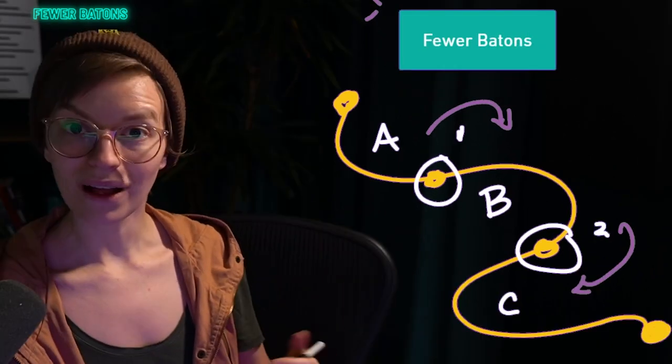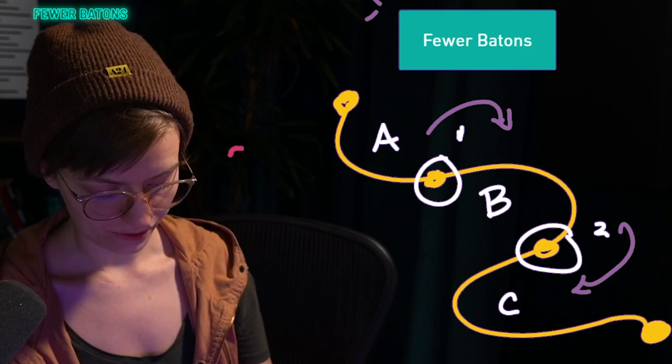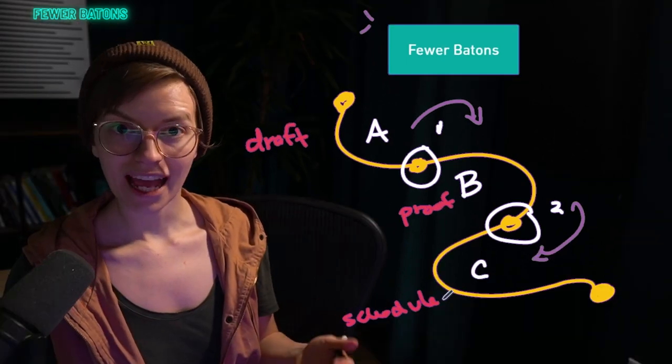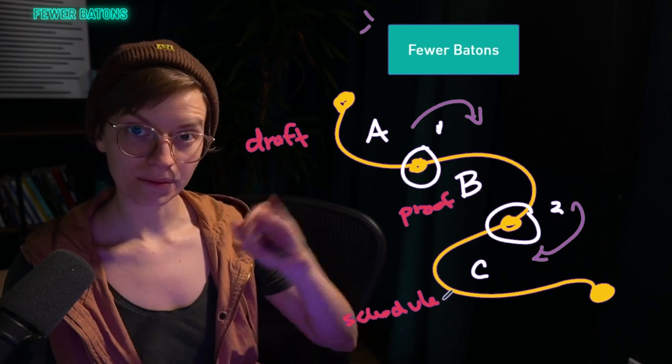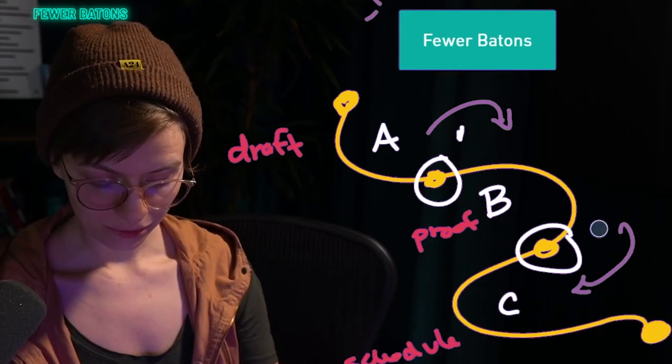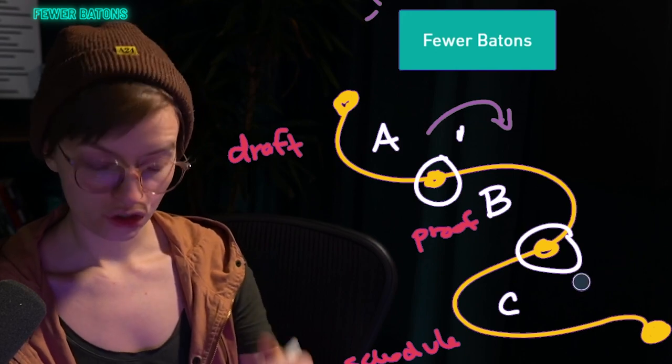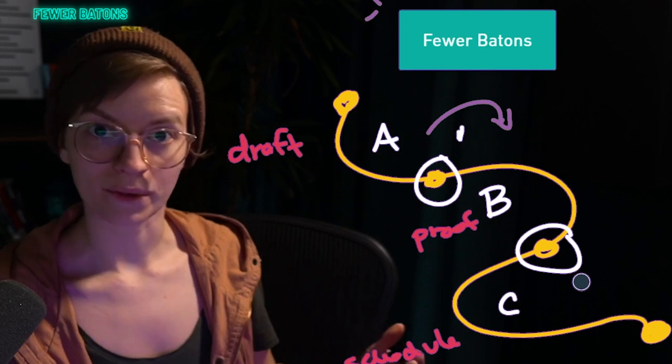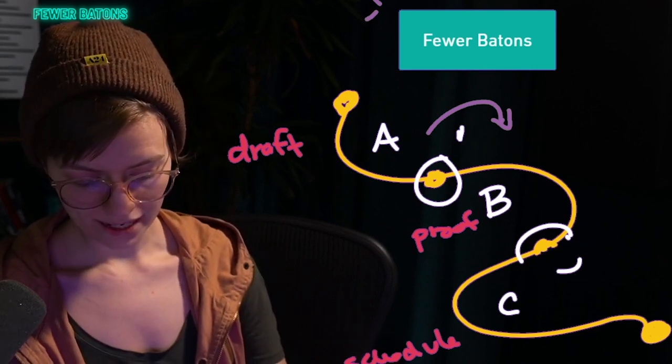The need for communication and the potential for miscommunication can increase with each handoff. So what's the strategy here? Well, let's take the process we have now of, say, draft, proof, and schedule. And rather than having A, B, and C, three separate people working on it, let's get rid of one of the baton exchanges. Let's get rid of the second one. So rather than two parts where we have to pass the baton and inform somebody else of what we've done in the past, there's only one time where that's happening.